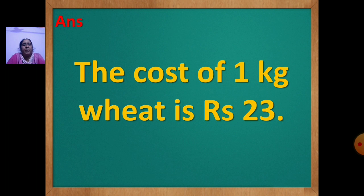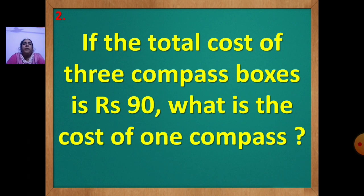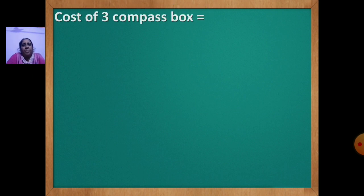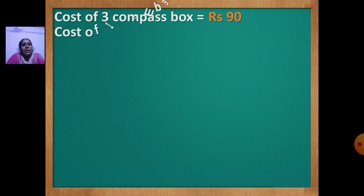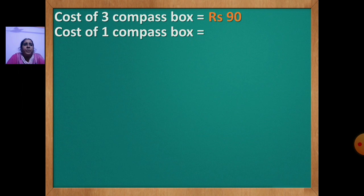Now we will do the second sum. If the total cost of 3 compass boxes is rupees 90, what is the cost of 1 compass box? Here the cost of 3 compass boxes is given and you have to find the cost of 1 compass box. First statement: cost of 3 compass boxes is rupees 90. Second statement: cost of 1 compass box — we have to find it. So we will do 90 divided by 3.